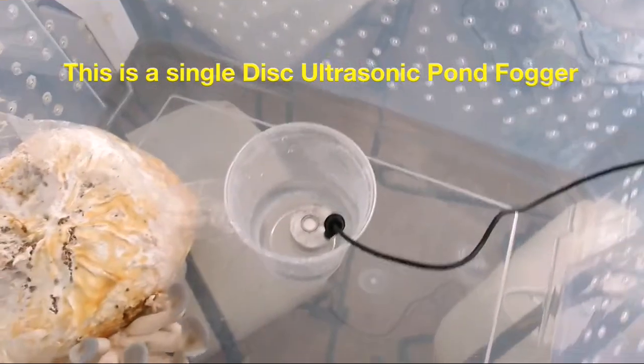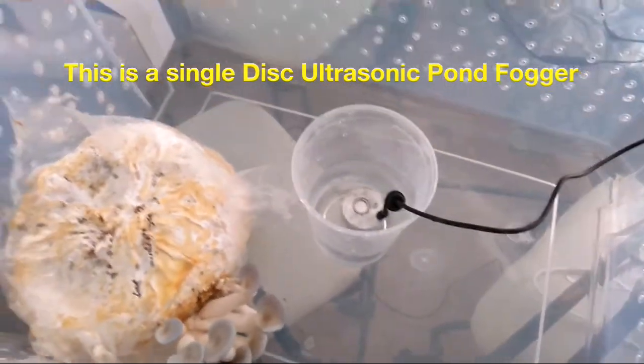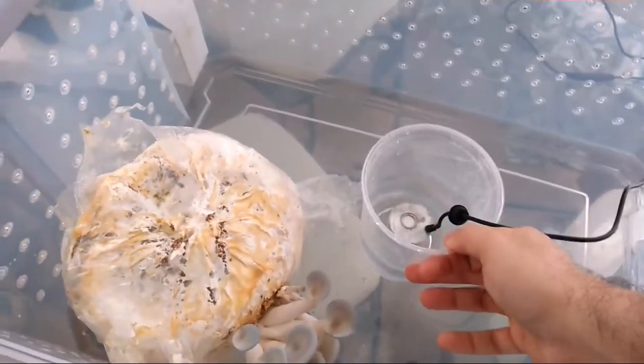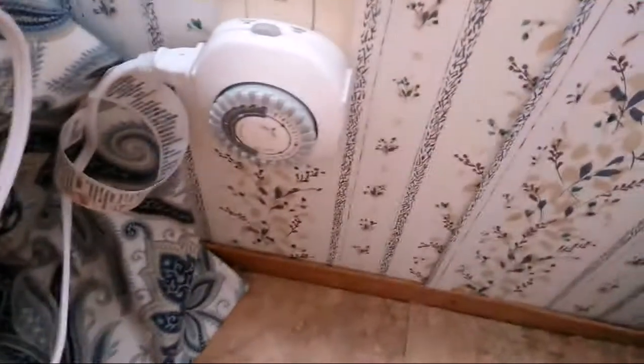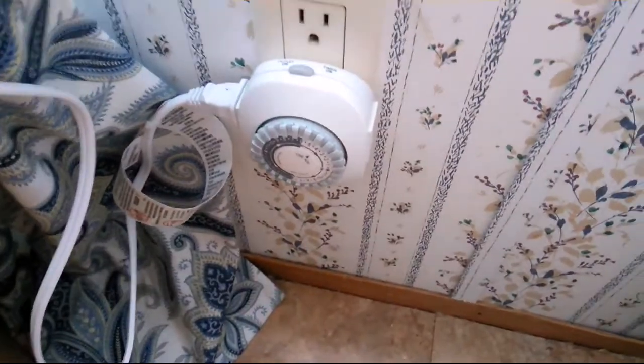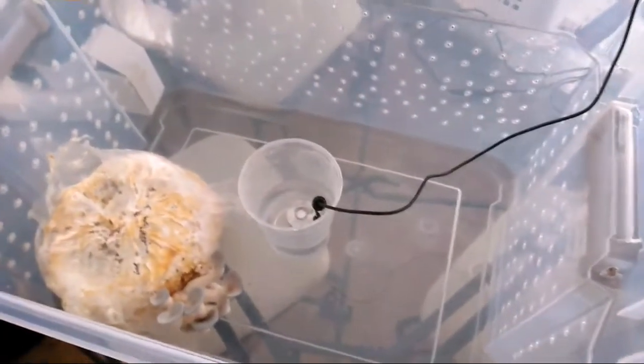Alright guys. Here we go. I went ahead and transferred my pond fogger into my tub with my little tanner water. And I got my fan on already. Now I do have this to the timer as you can see. Half hour on, half hour off. It seems to give it plenty of fresh air and plenty of humidity. I'm going to plug this in and show you guys what we made.